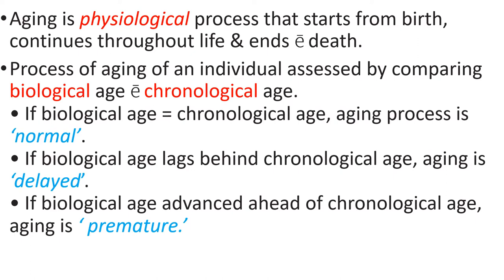Aging is a physiological process that starts from birth, continues throughout life, and ends with death. The aging process of an individual is assessed by comparing biological with chronological age. If biological age equals chronological age, aging is normal. If biological age lags behind, aging is delayed. If biological age is advanced ahead of chronological age, aging is premature.